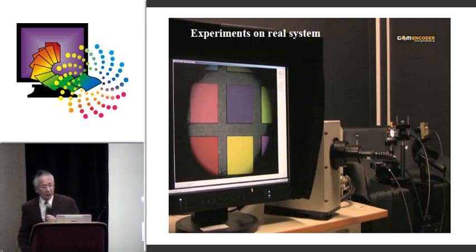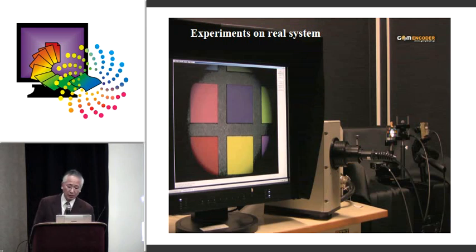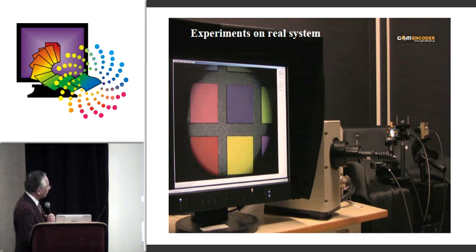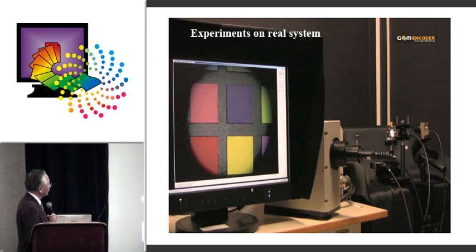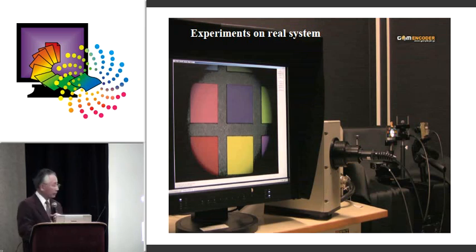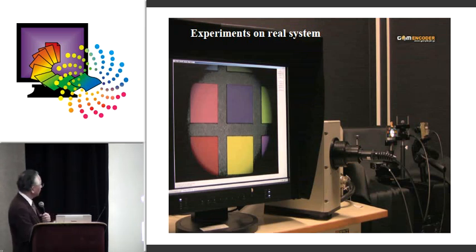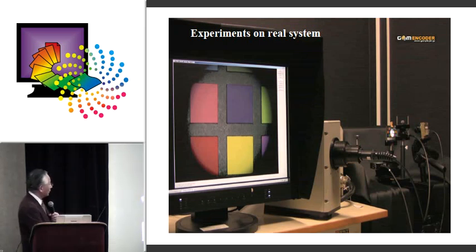This is an experiment using this system. This is the light source and light guide. Here is the monochrome camera. Here is the display. In this experiment, we use a color checker as the object. The object is illuminated by the proposed method, and the display image shows good color appearance very close to the original appearance.